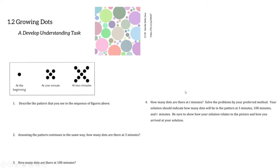Here is our first section in the MVP Integrated Math 1 curriculum. This is called 1.2 Growing Dots, a develop understanding task. In this activity, they've given us a simple diagram. At the beginning there was one dot; at one minute there are five dots; and at two minutes there are nine dots. I see four branches with two dots each and one dot in the middle — four times two is eight, plus one is nine.